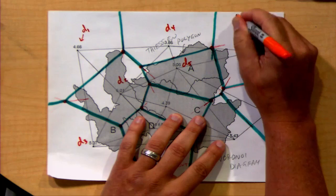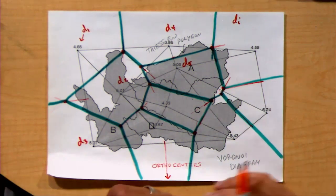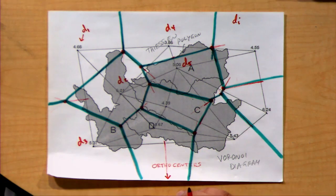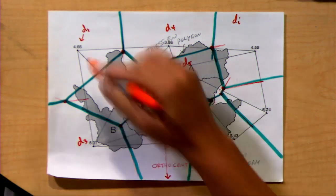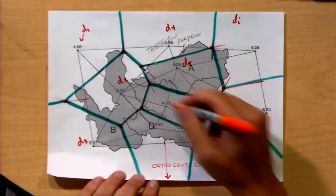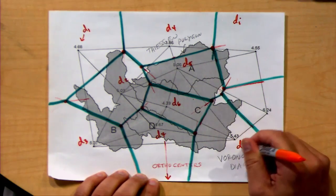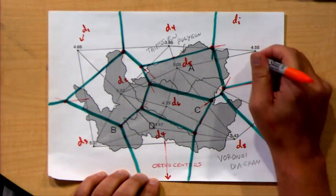Perhaps we label those as Di, where i goes from 1 to 12. There are 12 different ones in here. Okay, 1, 2, 3, 4, 5, 6, 7, 8, 9, 10. Actually, I should say there are 10 regions here. There were 12 triangles, but there are only 10 regions. D6, D7, D8, D9, and D10.